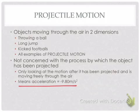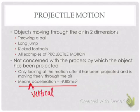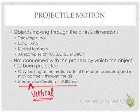Our acceleration is going to be negative 9.8 meters per second squared — that value is gravity. And what direction does gravity work in? Vertical. So vertical acceleration equals negative 9.8. That's a big distinction we have to make, because as these things fly through the air, the vertical acceleration is always going to be negative 9.8 — it's always gravity. The horizontal acceleration is not gravity, so we have to make that distinction.